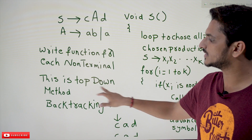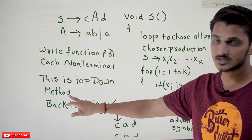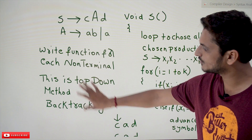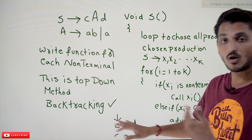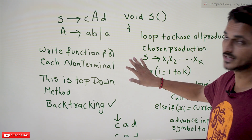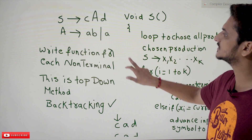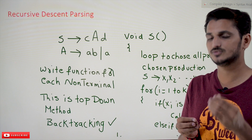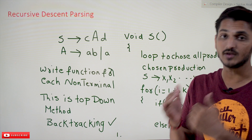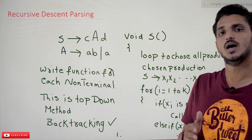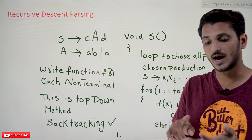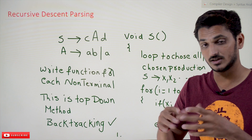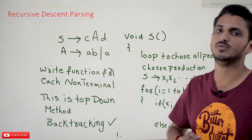Recursive descent parsing is a top-down method and it follows backtracking. We are going to understand how this method works. We will take a simple example context-free grammar, understand the method, and then extend this concept to our context-free grammar for identifying expressions and statements that we discussed in previous classes.